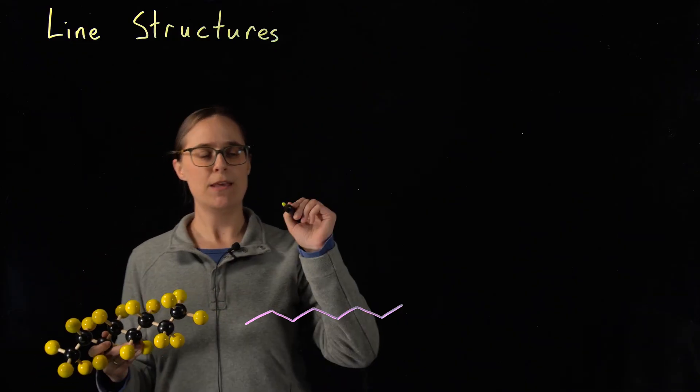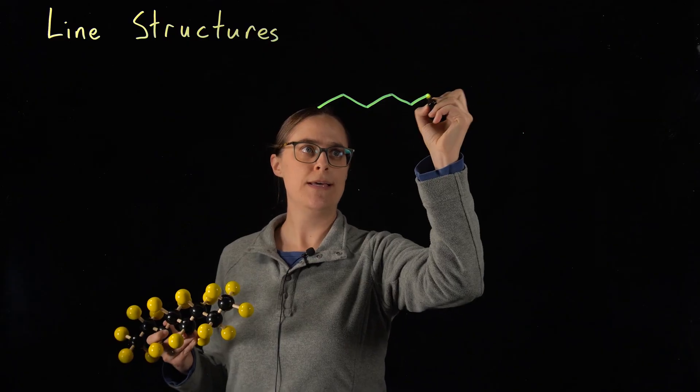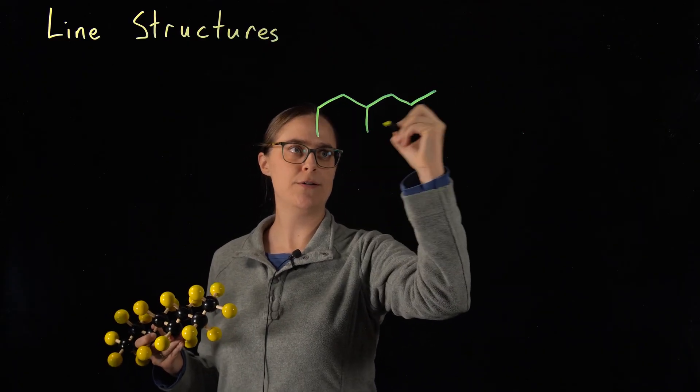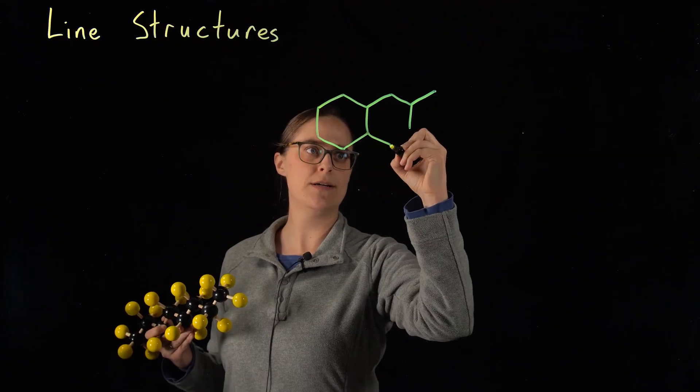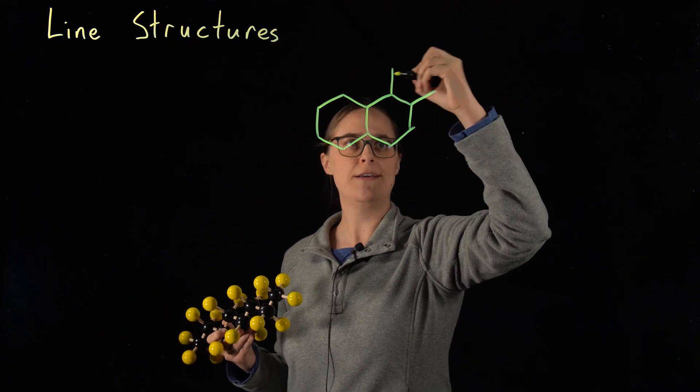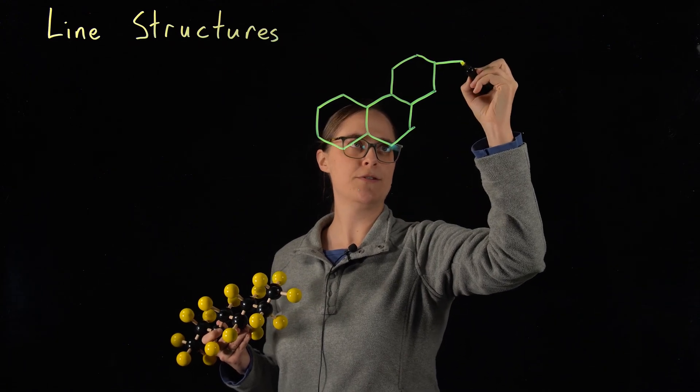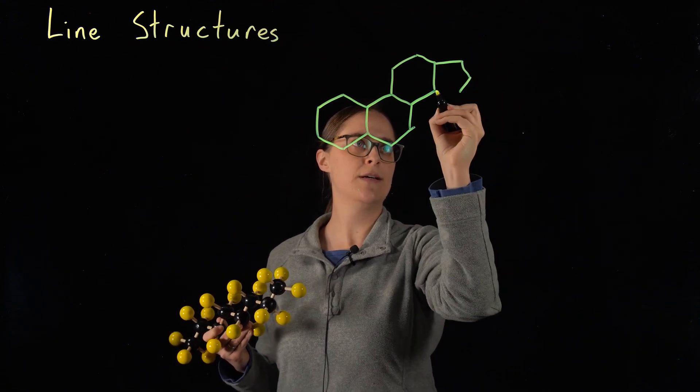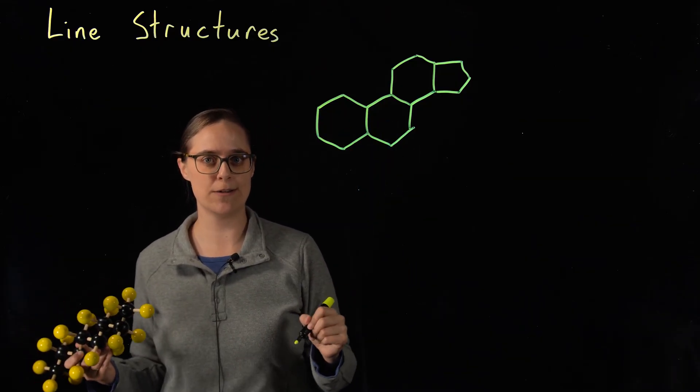Let me give you an example. If a molecule is classified as a steroid, it has a very particular structure in which four rings of carbons are bonded to each other in a very particular pattern. I'm drawing the line structure for the generic part of a steroid right now. As you can see, I drew it fairly quickly while I was talking.